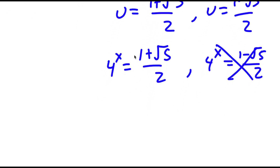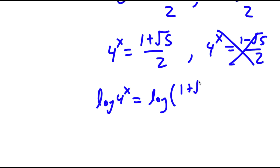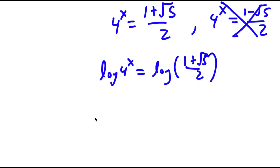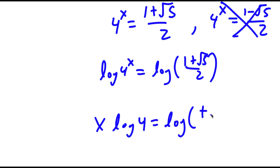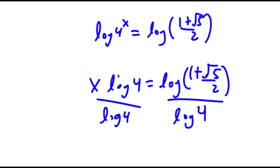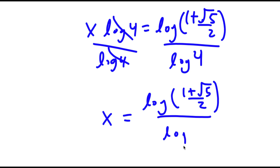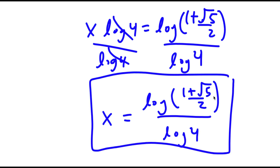So I have 4 to the power of x is equal to 1 plus the square root of 5 over 2. To solve this I'm going to take the log on both sides, giving x times log 4 is equal to log of 1 plus the square root of 5 over 2. Dividing both sides by log 4, these cancel out and x is equal to log of 1 plus the square root of 5 over 2, all over log 4.